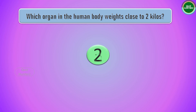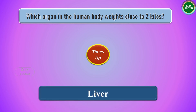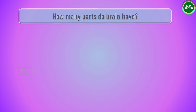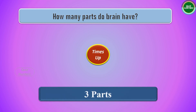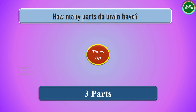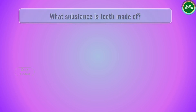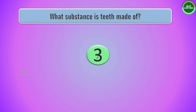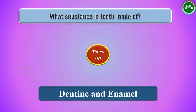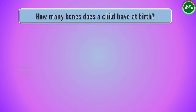Next question: which organ in the human body weighs close to two kilos? The answer is the liver. Next question: how many parts does the brain have? The answer is three parts. Next question: what substance are teeth made of? The answer is dentine and enamel.